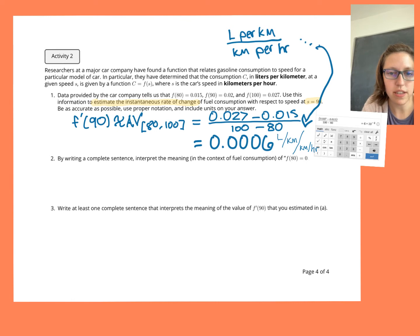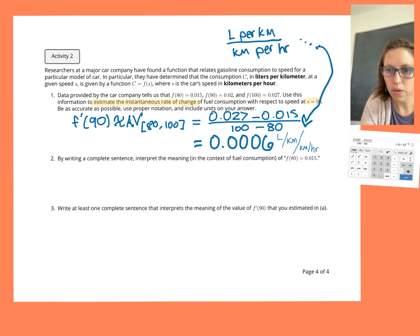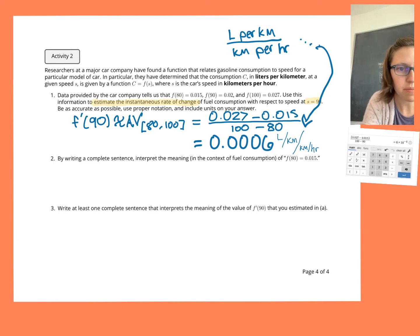Now let's see. By writing a complete sentence, let's interpret the meaning in the context of fuel consumption of the statement, f of 80 equals 0.015. It's weird that I only put one strange little quotation mark around that. What can we do? Okay. I want to get that out of the way. Put my little calculator over there.